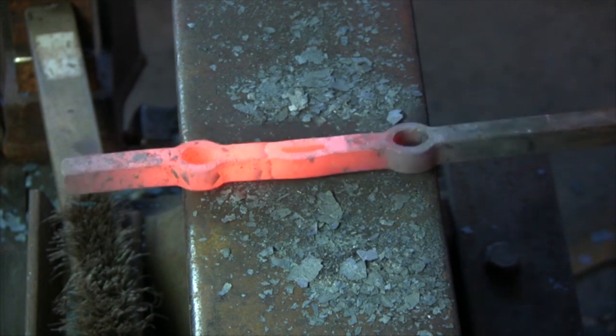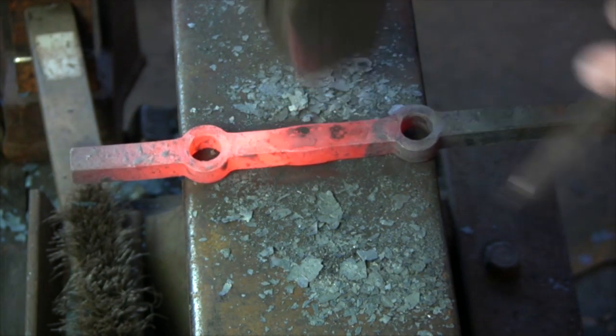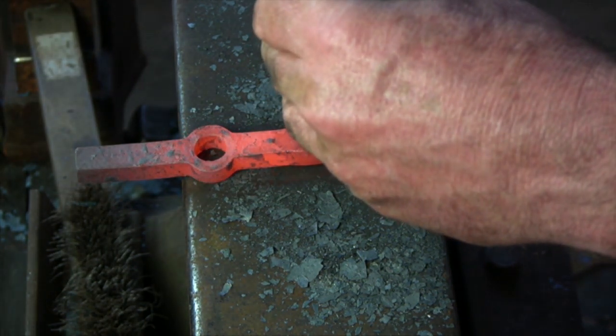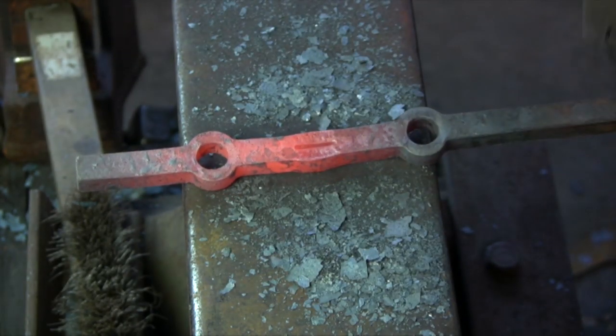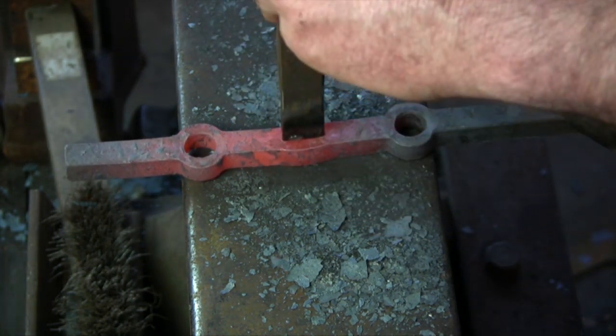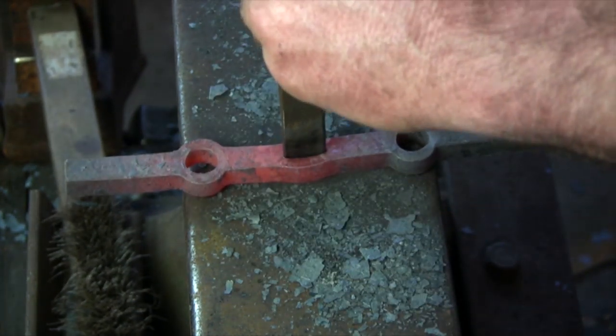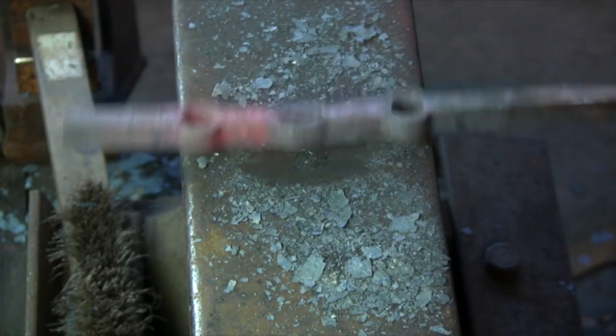Turn the bar over, look for the swelling, landmark your punch, punch to halfway, clean the slug. This slug is going to be too large for my pritchell hole, so I'm going to have to clear it over the hardy hole. No big deal.